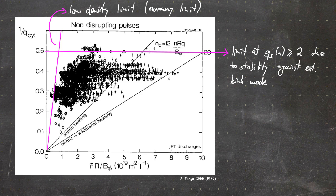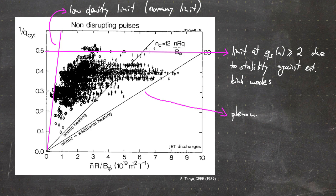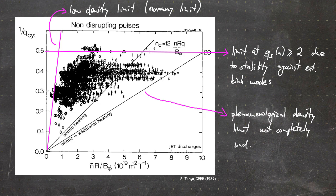This is the limit where the safety factor at the edge should be larger than 2 to get stability against the external kink mode — something which we discussed a few videos ago. And then we finally have this line here, which is the phenomenological — and as I said, experimentally observed — density limit which is not completely understood. So if we exceed that density limit we might get a disruption, which is something we want to avoid. This phenomenological density limit is still subject of active research.